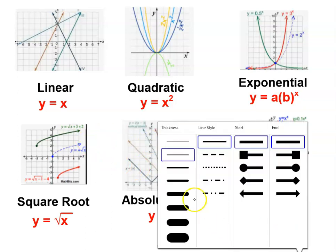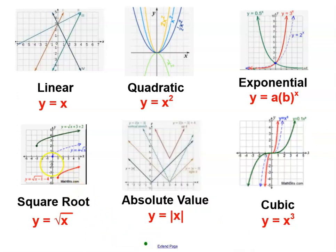Same is true for exponentials. You can be increasing as you read from left to right, like the red graph, or you can be decreasing as you read from left to right, like the green graph. The same with the square roots and the absolute values. They don't show them here, but they could also be reflected or pointing in the opposite direction. So you can be facing upwards or downwards.